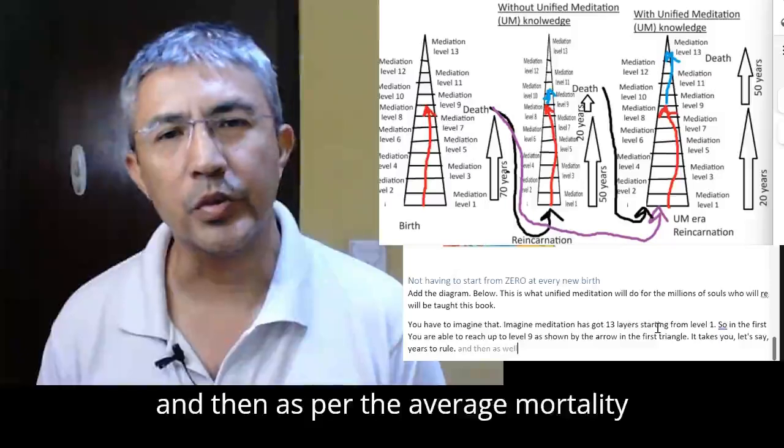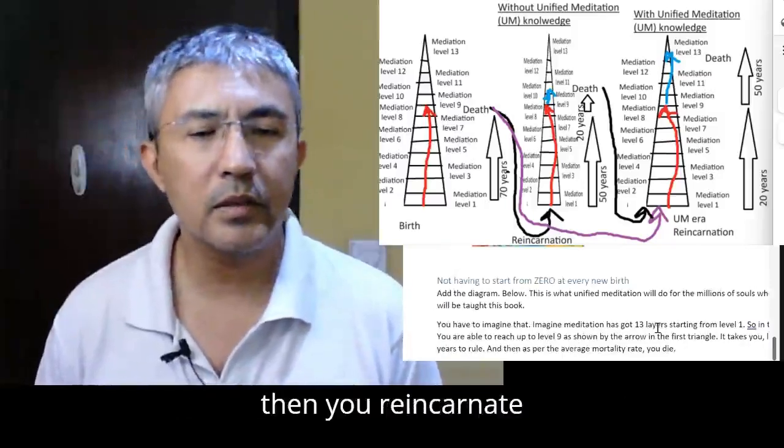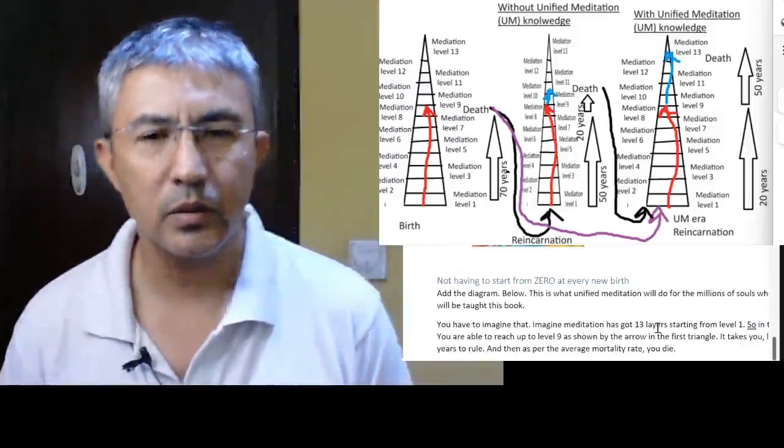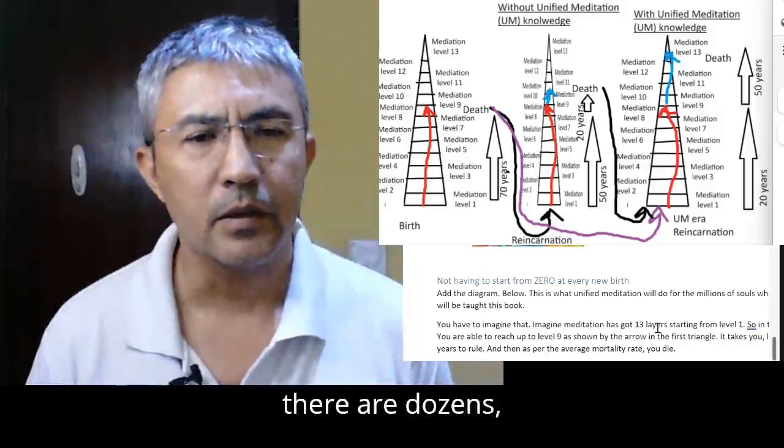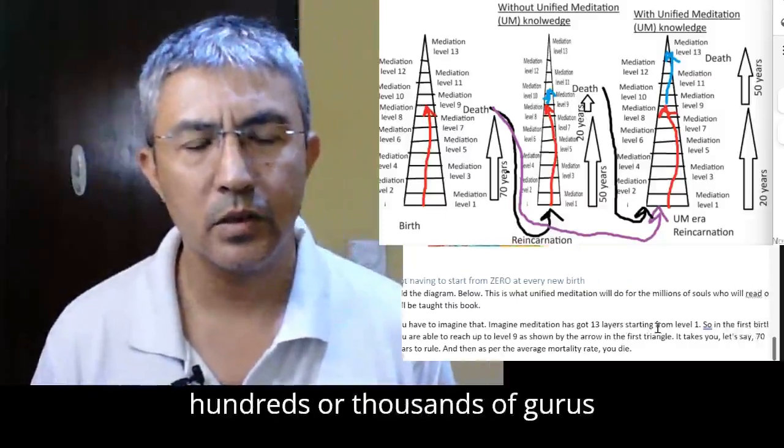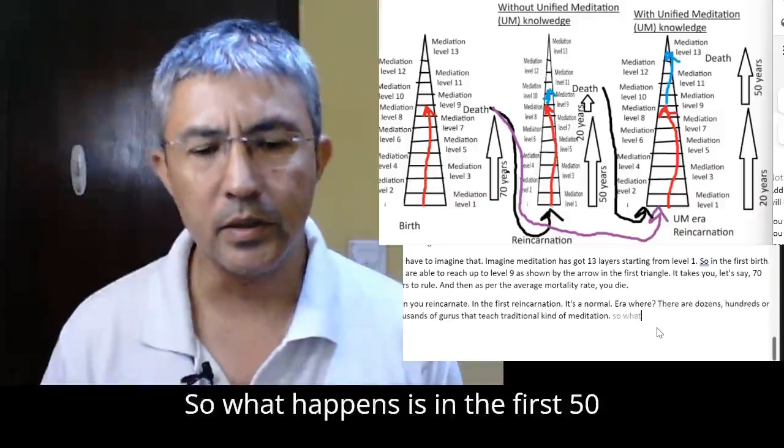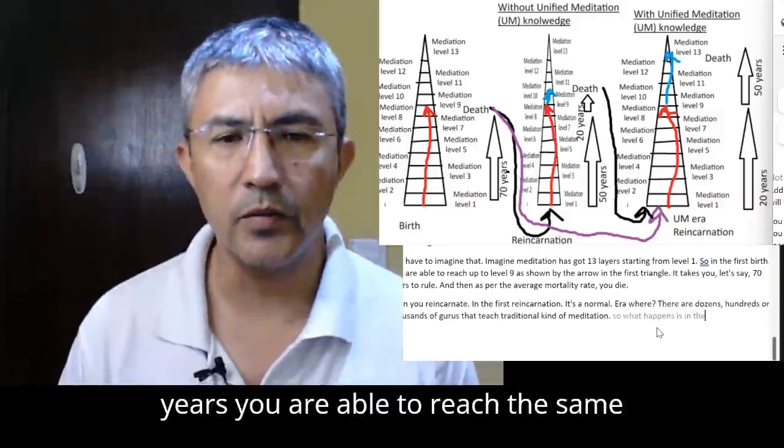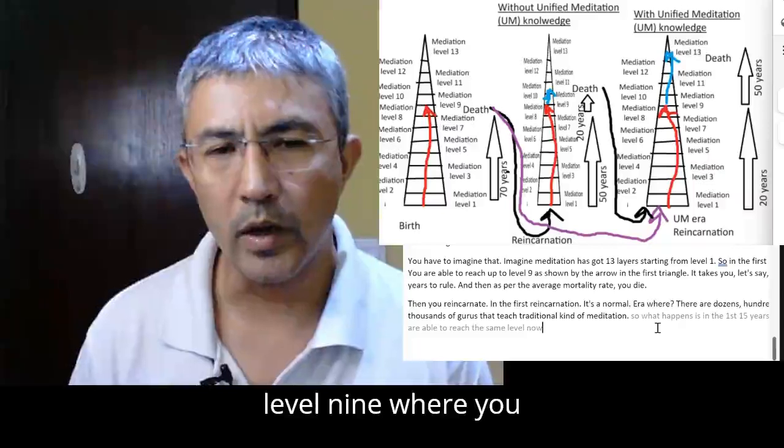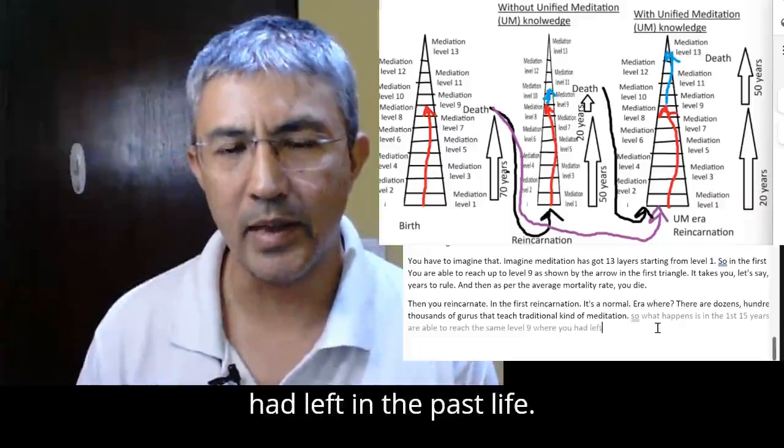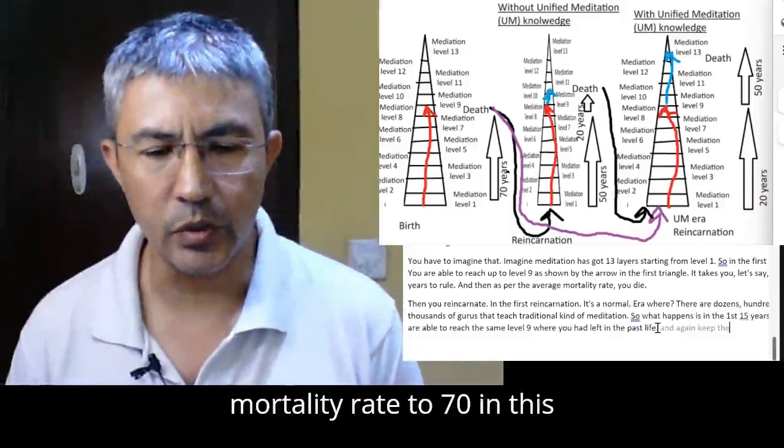And then as per the average mortality rate, you die. Then you reincarnate in the first reincarnation. It's a normal era where there are dozens, hundreds or thousands of gurus that teach traditional kind of meditation. So what happens is in the first 50 years, you are able to reach the same level nine where you had left in the past life.